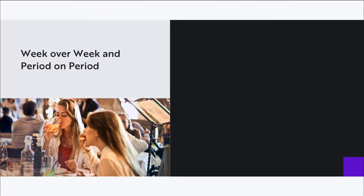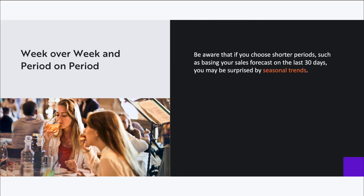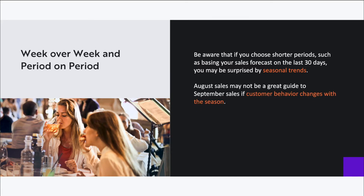The next technique is week over week and period on period. Similar to the month over month approach, you may choose to define your comparative sales period as a rolling average of the last 90 days, the last 30 days, or simply the last week. Be aware that if you choose shorter periods, you may be surprised by seasonal trends — August sales may not be a great guide to September sales if customer behavior changes as the season changes.